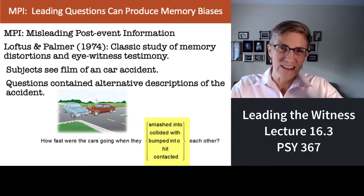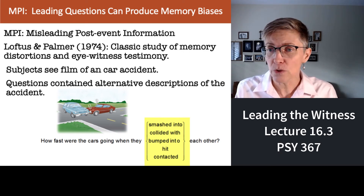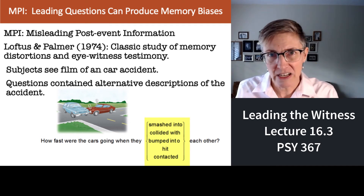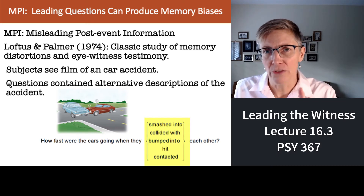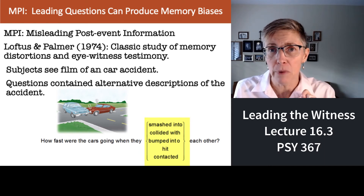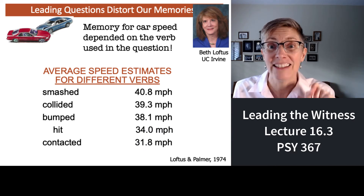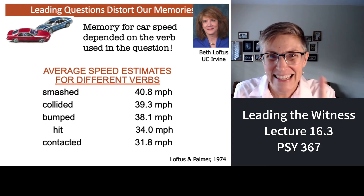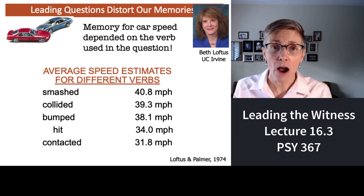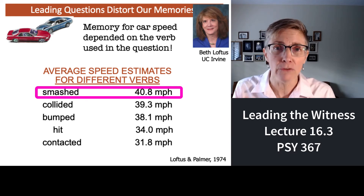So 'collided,' 'crashed into each other' — there's a lot of force behind those words. But 'how fast were the cars going when they contacted each other?' — 'contact' doesn't imply force. So everybody sees the same thing, but the wording of the question changes. What did Loftus and Palmer find? They found that subjects' memory for the speed of the cars depended significantly on a single word in the question. If the subjects were asked how fast the cars were going when they smashed into each other, then on average the speed they gave was about 40 miles an hour.